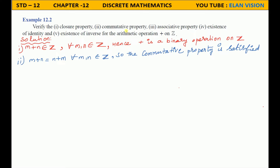Next property: Commutative property. For elements in Z, take 2 elements: for any 2 and 3 belonging to integers, 2 plus 3 is equal to 3 plus 2. The condition is satisfied. Commutative property is true.